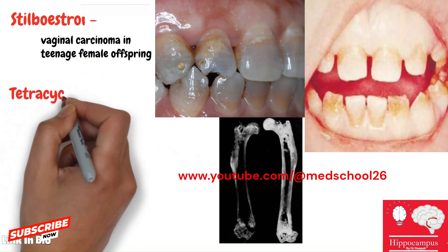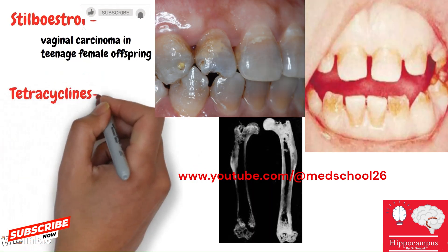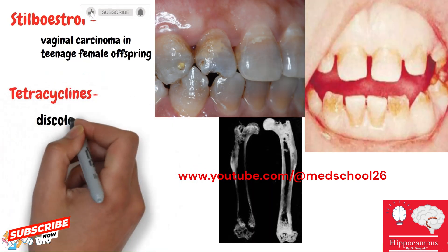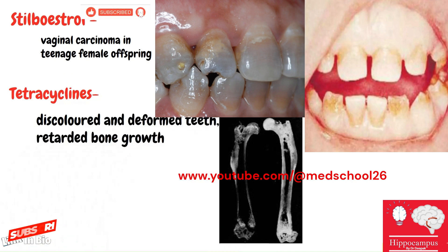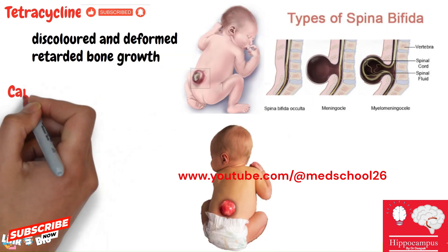Eighteenth: tetracyclines — cause discolored and deformed teeth, and retarded bone growth.